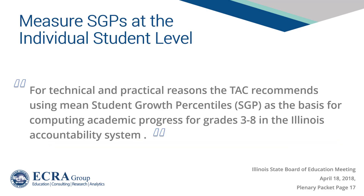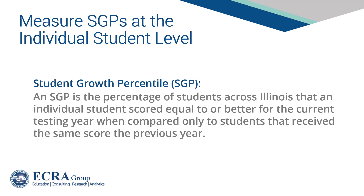Recommendations from the TAC to ISBE on April 18, 2018 state: for technical and practical reasons, the TAC recommends using mean student growth percentiles as the basis for computing academic progress for grades 3 through 8 in the Illinois Accountability System. Based on comments from the TAC during their April 30, 2018 meeting, one can glean insight into the direction ISBE may be headed. Note that while the document indicates growth will be measured in grades 3 through 8, it will most likely be measured in grades 4 through 8, as grade 3 will be needed as the baseline to measure growth in grade 4. An SGP is the percentage of students across Illinois that an individual student scored equal to or better for the current testing year, when compared to only students that received the same score the previous year. This comparison is done separately for each grade level and subject.